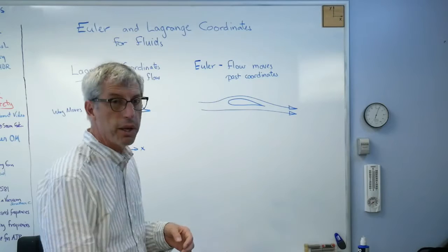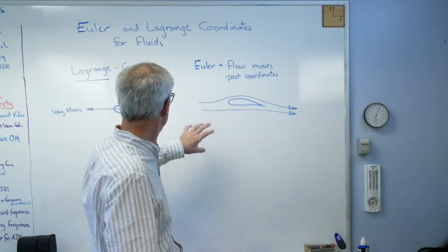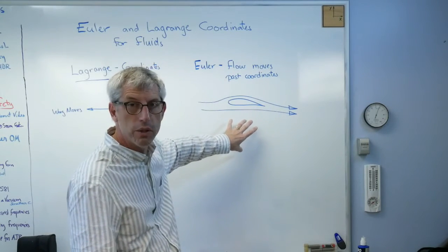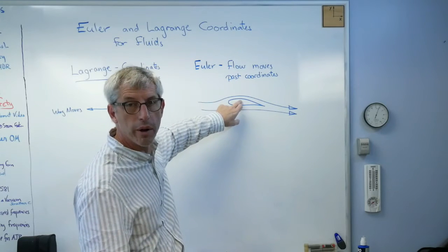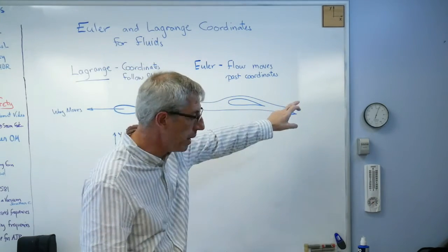Eulerian is the exact opposite. The fluid moves and the body doesn't. So imagine now, instead of a plane flying past my window, this is a wind tunnel. So the wing, or wing model maybe, is fixed in the wind tunnel and the air blows past it.